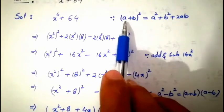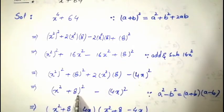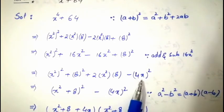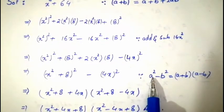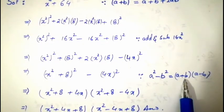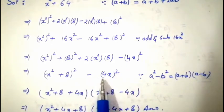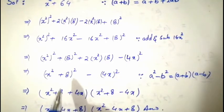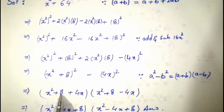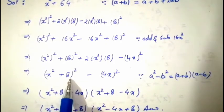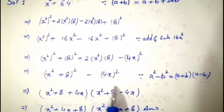Closing the formula: a = x² and b = 8, so we get (x² + 8)² − (4x)². Now we apply the second formula: a² − b² = (a + b)(a − b). Here a = (x² + 8) and b = 4x. So we get (x² + 8 + 4x)(x² + 8 − 4x).